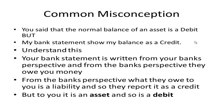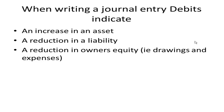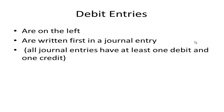But to you, money in the bank is an asset, so from your perspective it's a debit. When writing a journal entry: debits indicate an increase in an asset, a reduction in a liability, or a reduction in owner's equity — which happens for drawings and expenses. Debit entries are written on the left-hand column and are written first in journal entries. Also remember, all journals have at least one debit and one credit.